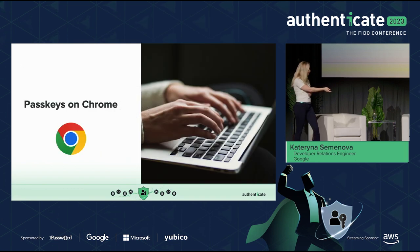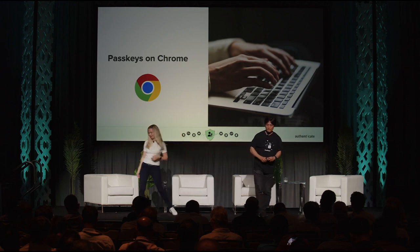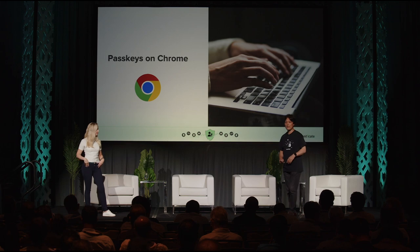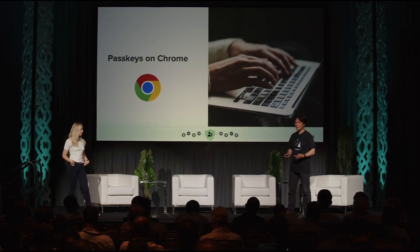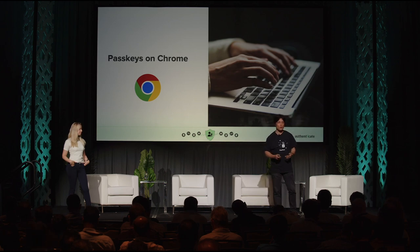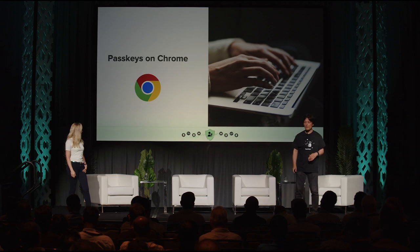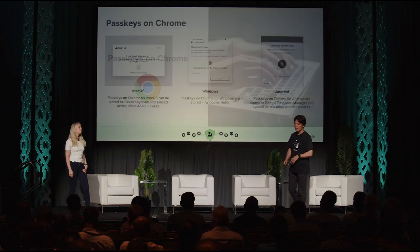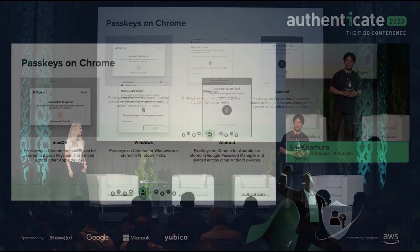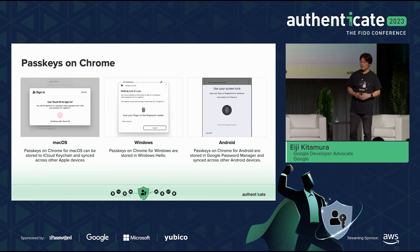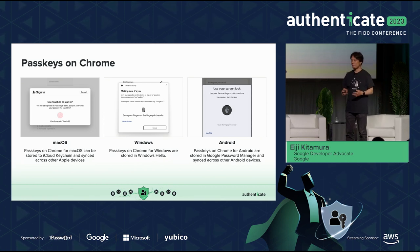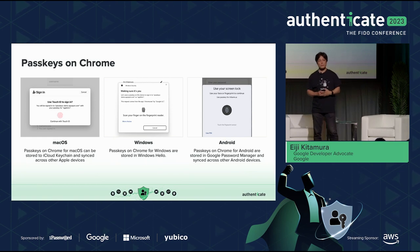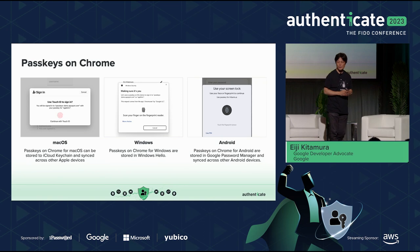Now let's talk about Chrome. In 2018, Chrome announced support for WebAuthn, the standard browser API that later supports PassKeys. It opened up the door for many websites to bring strong authentication for users. Last year, we announced the support for PassKeys in Chrome. WebAuthn is available across many different platforms, including macOS, Windows, Android, and so on. Each platform has its unique PassKey infrastructure, which Chrome is trying to better cooperate with.